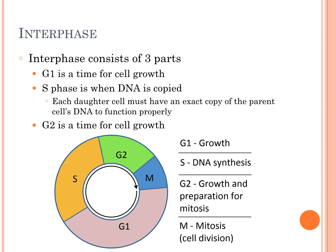Then we have the S phase, which is the first part of preparing for mitosis — the cell is synthesizing DNA. Remember, the daughter cells have to have an exact copy of the parent cell's DNA, so this is the part of the cell cycle where DNA is copied. Then we go into another gap phase called G2, when the cell is finalizing preparations for mitosis: duplicating its organelles, growing a little more, and getting ready for cell division.